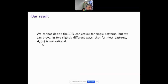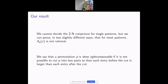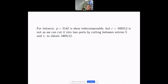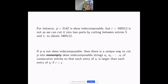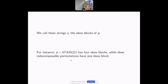A permutation is skew-indecomposable if you cannot cut it into two parts so that everything before the cut is bigger than everything after the cut. If a permutation is not skew-indecomposable, there is a unique way to cut it into non-empty skew-indecomposable pieces called skew blocks. For example, a certain permutation may have four skew blocks — these are the building blocks needed in the generating function argument.